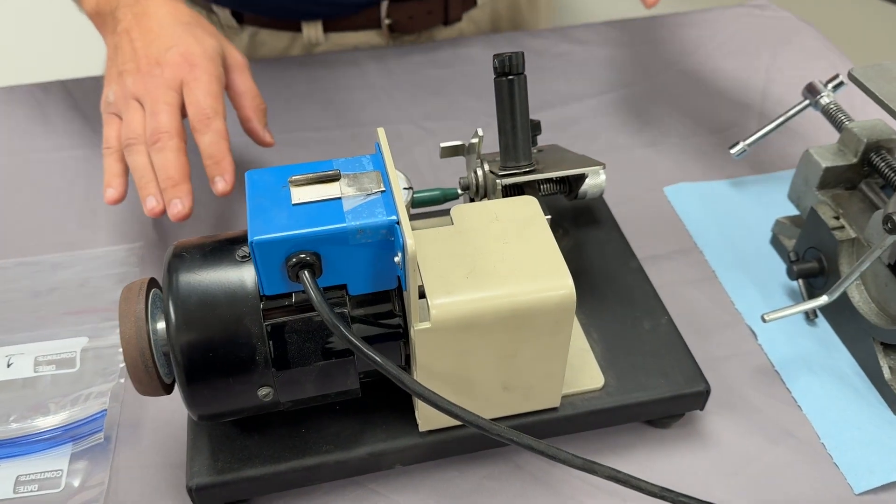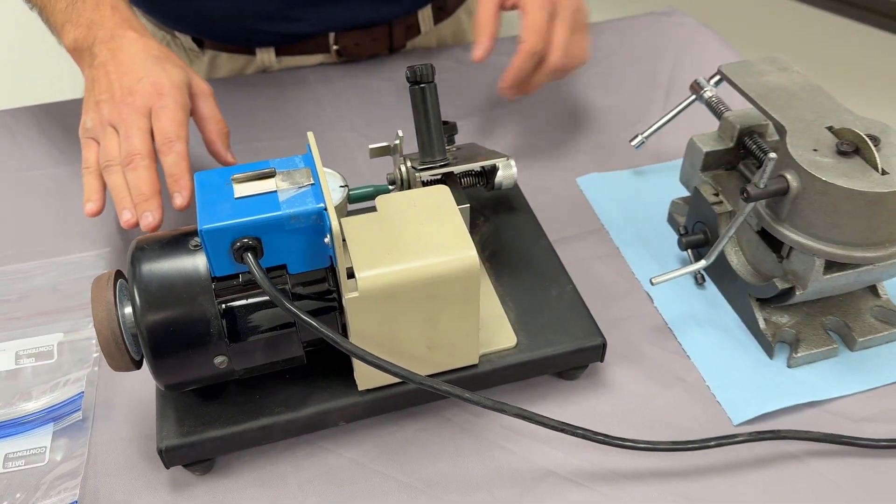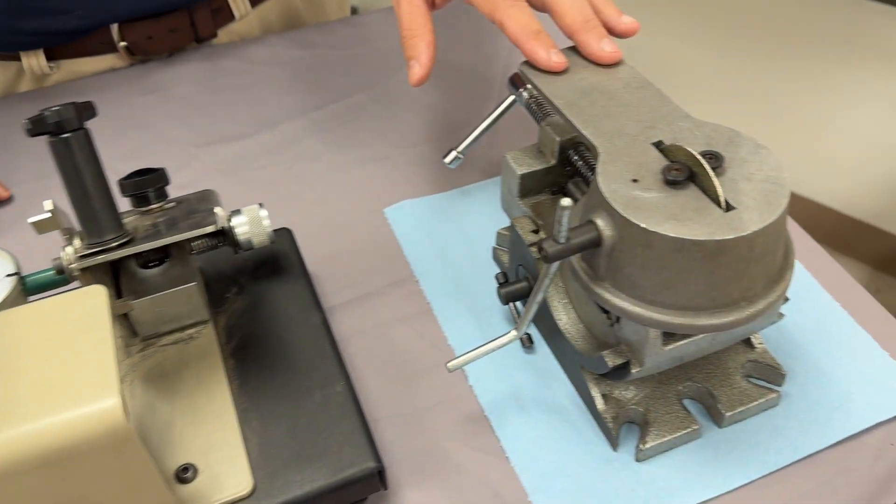And then we have two methods here to do the actual ring filing. We have an electric option and we have a manual option.